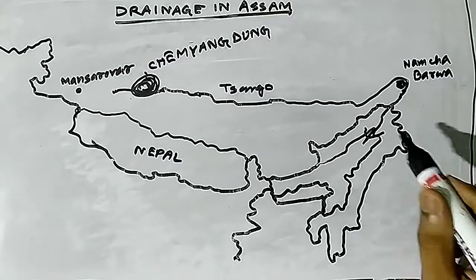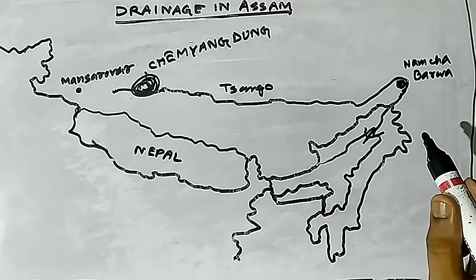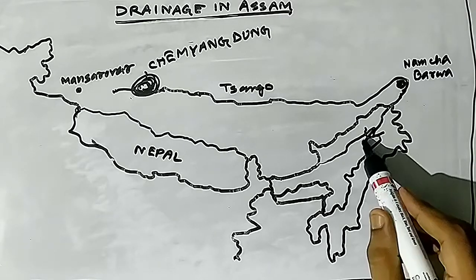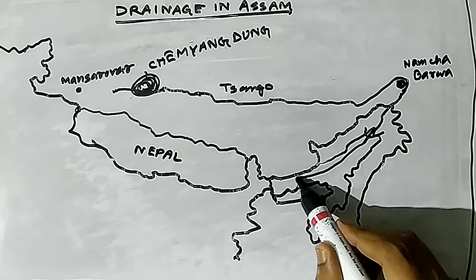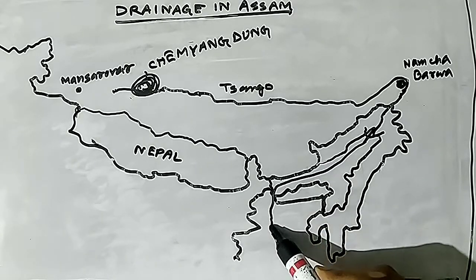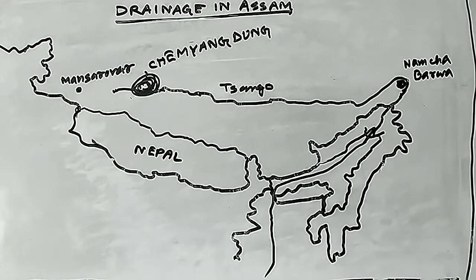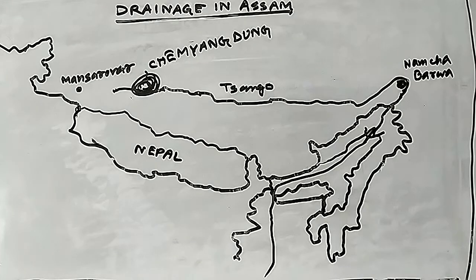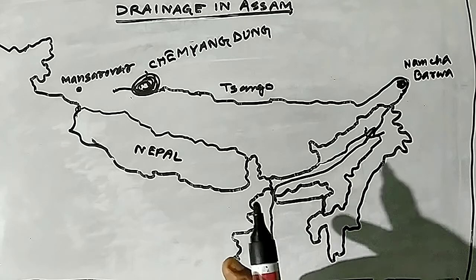The combined course then takes the name Brahmaputra and flows southwestward up to Dhubri. From Dhubri it takes a southward course and enters Bangladesh, where it is known as Jamuna and meets the Padma. It then flows as Padma until it meets the Meghna, and flows for 140 km to meet the Bay of Bengal.